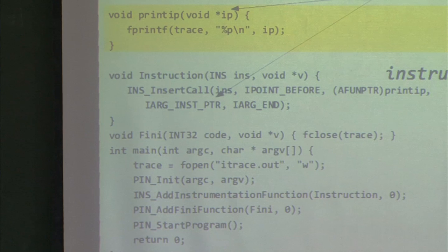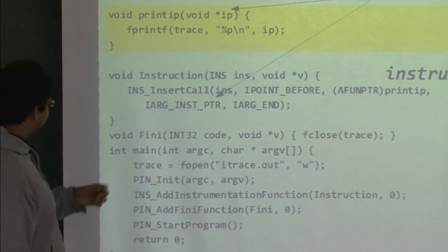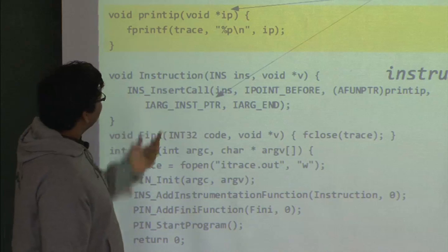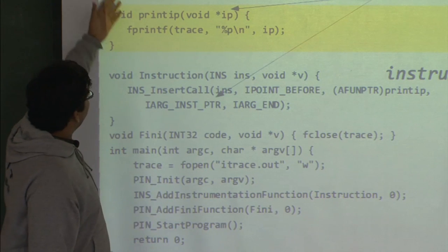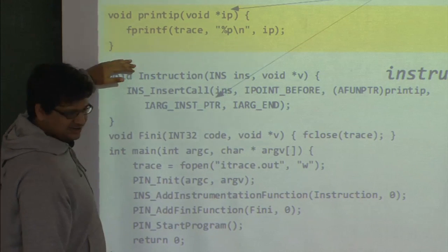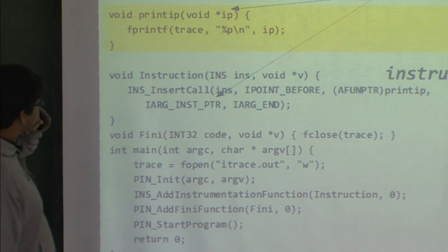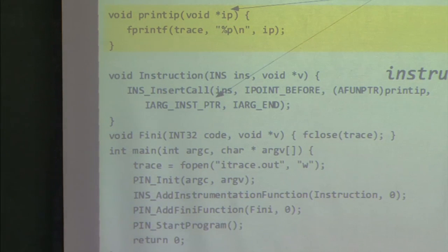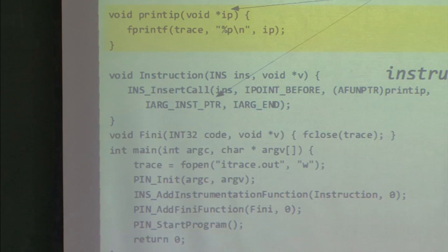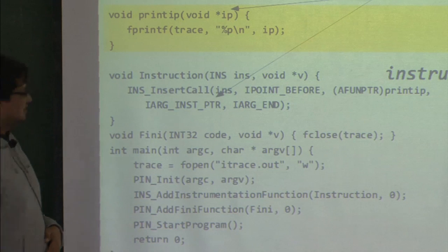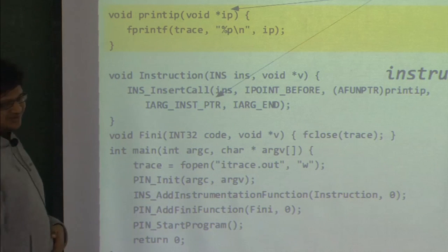For example, to pass a file pointer to the analysis function instead of making it global, you could define the file pointer, open the file, and then pass it as an argument. The analysis function can have any number of arguments, and in INS_InsertCall you specify what arguments to pass.